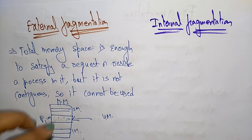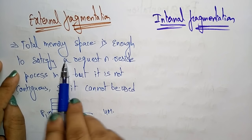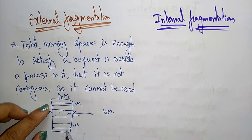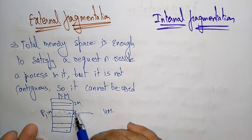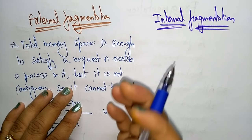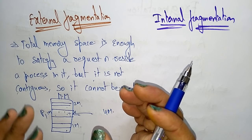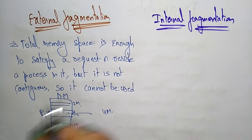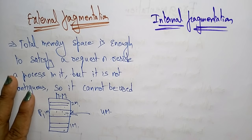This is a dynamic approach — you can store the process, but this type of problem you call external fragmentation. The total memory space is enough and there is space, but whatever request you are doing and whatever process you want to store in main memory, it can fit but it is not in a contiguous memory location. Whether it is fixed or dynamic partitioning, the data is not contiguous, so it cannot be used.